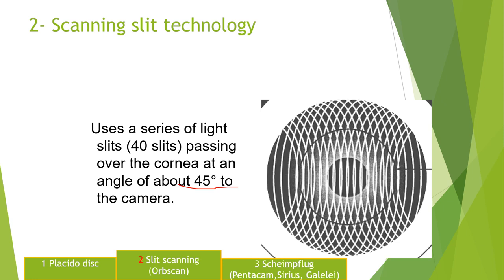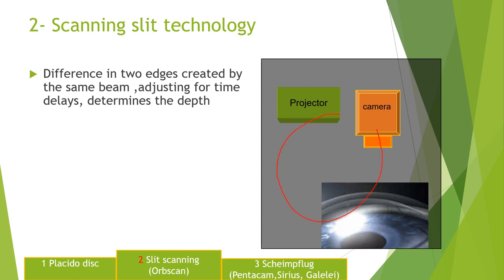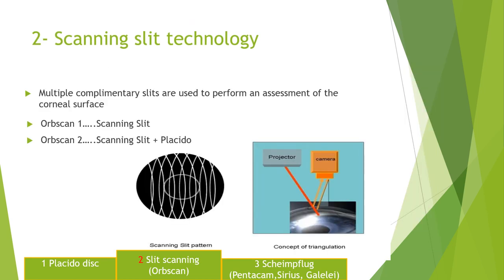How does it measure the elevation? You have a projector, and there is one reflection from the anterior corneal surface and one reflection from the posterior corneal surface. The difference between the two reflections is the depth of the cornea or the pachymetry, and from there the data is acquired. In the Orbscan we use scanning slit technology, and that is the only machine in the market which uses the scanning slit technology.